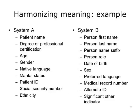Let's go over an example of how challenging semantic harmonization could be. We have System A and System B. Imagine System A wants to send System B demographic information. System A has: patient name, degree of professional certification, age, gender, native language, marital status, patient ID, social security number, and ethnicity. System B has: person first name, person last name, person name suffix, person role, date of birth, sex, preferred language, medical record number, alternate ID, and significant other indicator. How would you map the demographics?